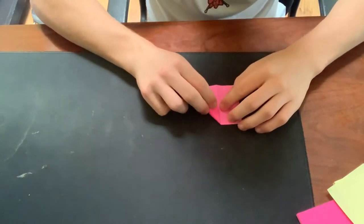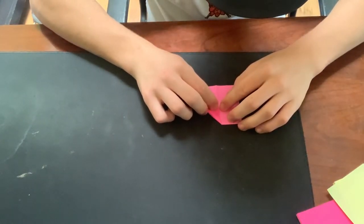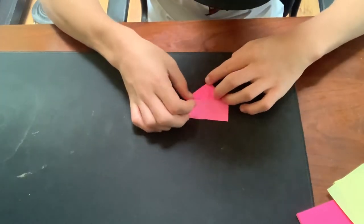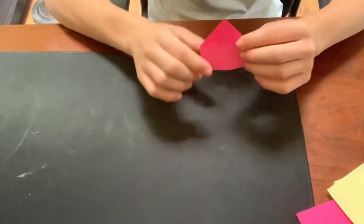Next thing, you're going to fold it like making a paper airplane. Very similar to that, you just fold the edges to the center line you just folded. Should look like you're making a paper airplane.